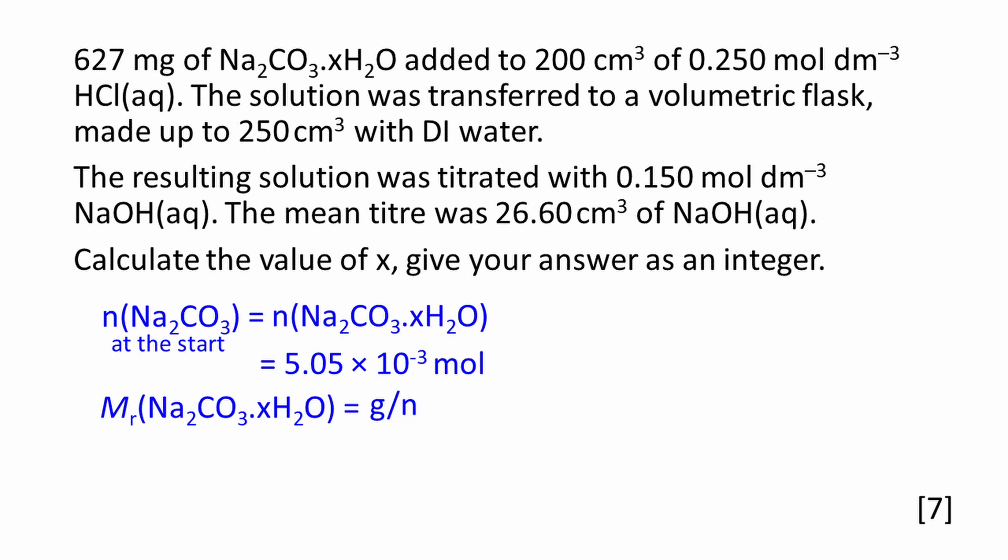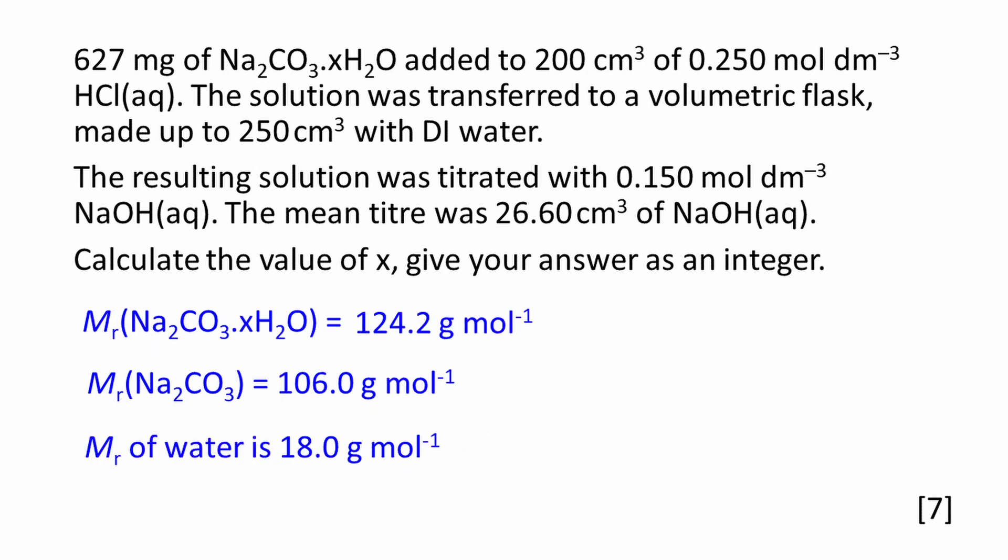The molar mass of the hydrated sodium carbonate can be found using: molar mass = mass ÷ amount. The mass of the hydrated sodium carbonate given in the question is 627 milligrams; converting to grams by dividing by 1000, the molar mass of the hydrated sodium carbonate works out to be 124.2 g mol⁻¹. The molar mass of anhydrous sodium carbonate, found using relative atomic masses from the datasheet, works out to be 106.0 g mol⁻¹.